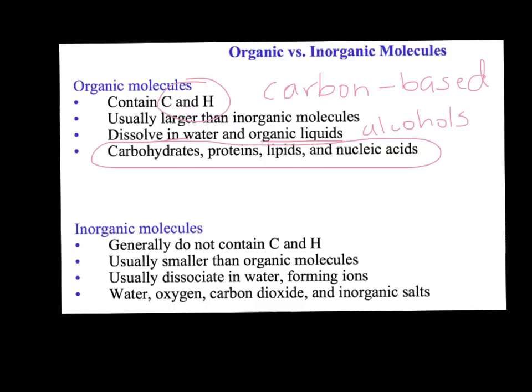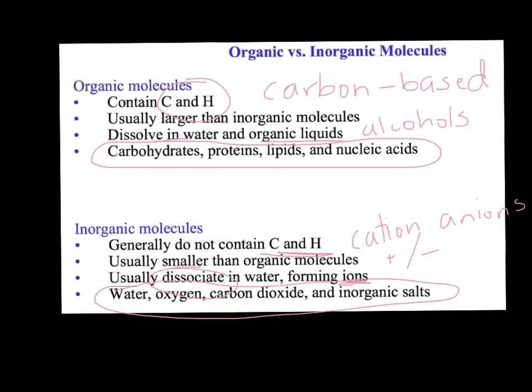Inorganic molecules are basically the opposite. They don't usually contain carbon and hydrogen, although there are exceptions. So if you see carbon, do not automatically say organic — you need to look at all the facts. Inorganic molecules are usually fairly small and they usually dissociate, meaning they make ions — those things with positive or negative charges. Cations are positive, anions are negative. Examples include water, oxygen, carbon dioxide, and inorganic salts. Compare these two carefully and use all the facts to determine if something is organic or inorganic.